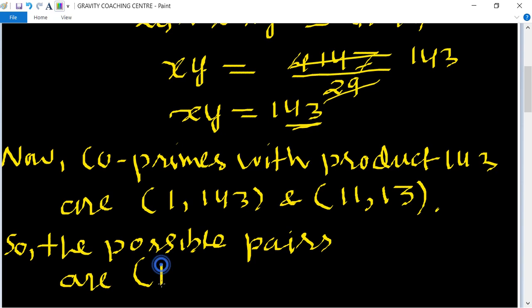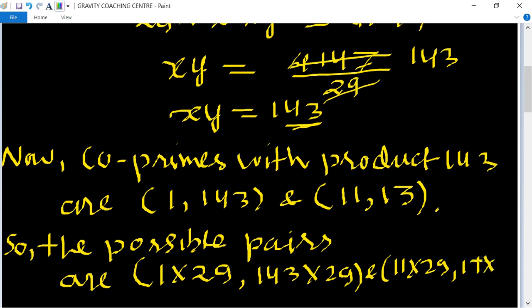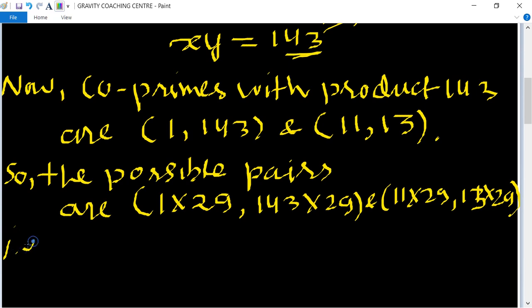1 into 29 comma 143 into 29, and 11 into 29 comma 13 into 29. So that is 29 comma 143 into 29, and 319 comma 377.